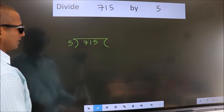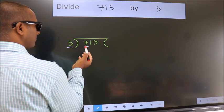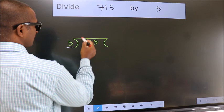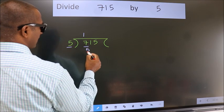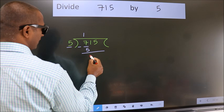Next, here we have 7, here 5. A number close to 7 in 5 table is 5 once 5. Now, we should subtract. We get 2.